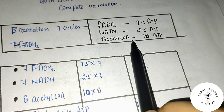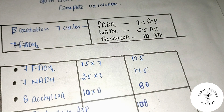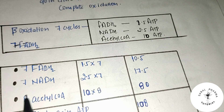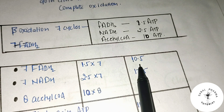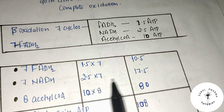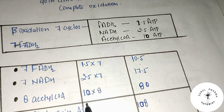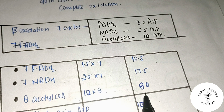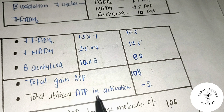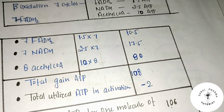To summarize the energetics: 7 cycles of beta-oxidation yield 7 FADH2 at 1.5 ATP each, 7 NADH at 2.5 ATP each, and 8 acetyl CoA at 10 ATP each. There is 1 extra acetyl CoA beyond the 7 cycles. After subtracting 2 ATP for the activation step, the total net ATP gain from complete oxidation of palmitic acid is 106 ATP.